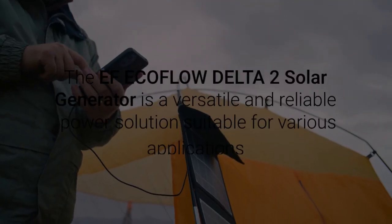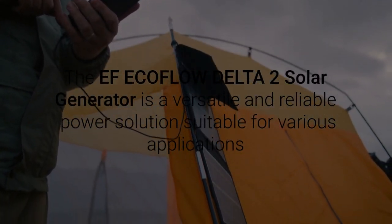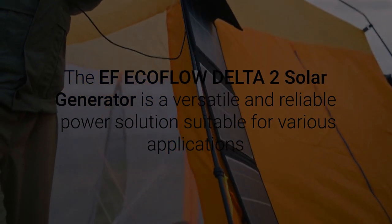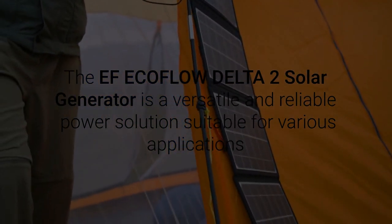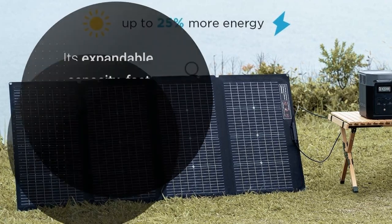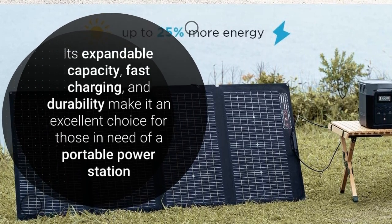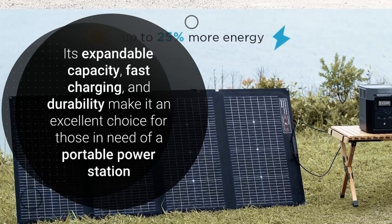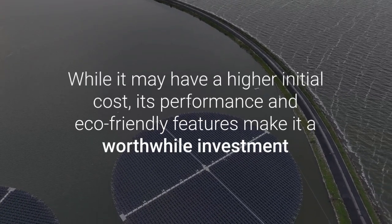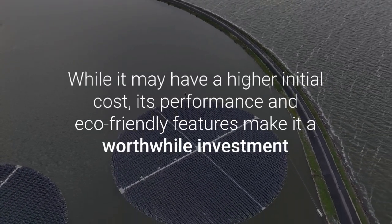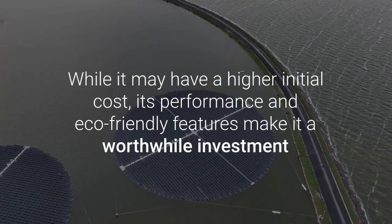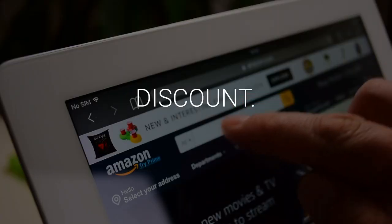To summarize, the EF EcoFlow Delta II Solar Generator is a versatile and reliable power solution suitable for various applications. Its expandable capacity, fast charging, and durability make it an excellent choice for those in need of a portable power station. While it may have a higher initial cost, its performance and eco-friendly features make it a worthwhile investment. Click on the link below to get discount.